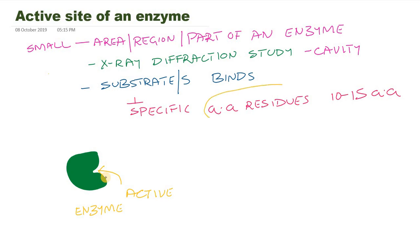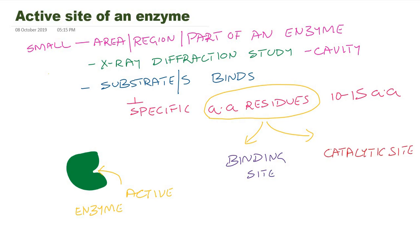The amino acid residues of the active site can be divided into two types. One is binding residues — those amino acids which have got binding activity — we call it the binding site. Among these 10 to 15 amino acids, a few actually catalyze the reaction. That is called the catalytic site, which usually comprises 2 to 4 amino acids.